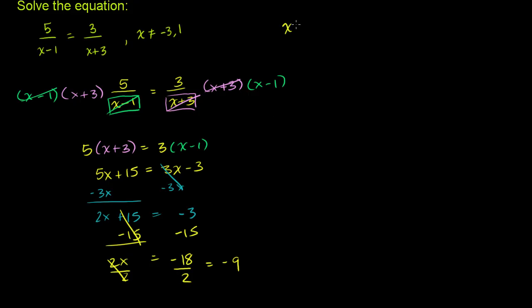We get x is equal to negative 9. And of course, we say, well, it's good that it doesn't equal one of these things. That would have messed things up. And now let's test. Let's make sure that x equals negative 9 satisfies this equation. Let's make sure it satisfies it.